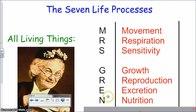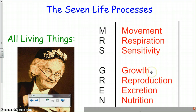Mrs. Gren is the mnemonic: M is for movement, so you have to move if you're a living thing. R is for respiration — you have to respire or breathe. S is for sensitivity — you have to be sensitive to certain stimuli, whether it's light or touch. G is for growth. R is for reproduction. E is for excretion — you have to excrete waste. And N is for nutrition — you have to eat or undergo some type of nutritive process. So all living things do these seven processes.